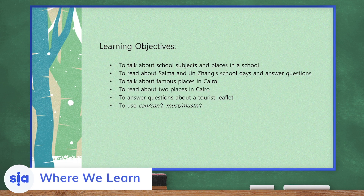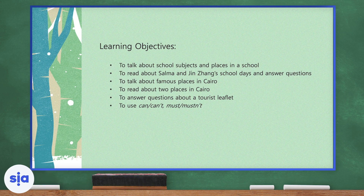Our objectives for the day are: we're going to talk about school subjects and places in a school. We will read about Salma and Yin Zhang's school days and answer questions. We will talk about famous places in Cairo. We're going to read about two places in Cairo. We will answer questions about a tourist leaflet. We will use can or can't, must or mustn't.